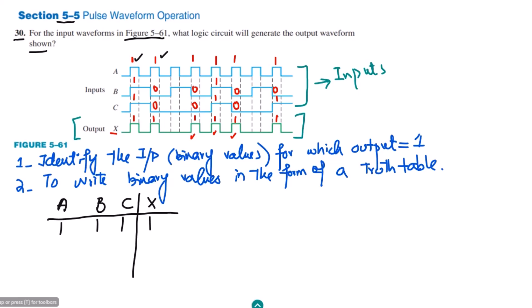The second combination is 1, 0, 0, and the output for it is 1. The third one is a replication of the second, and the fourth is a replication of the first. The fifth is also a replication of the second and third. The last combination is 1, 0, 1, and for it the output is also 1. So the unique rows in the truth table are: 1,1,1 → 1; 1,0,0 → 1; and 1,0,1 → 1.